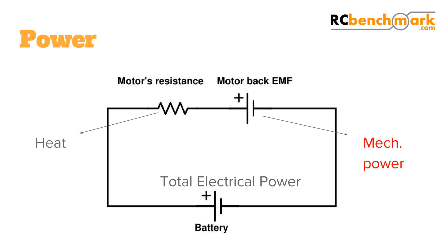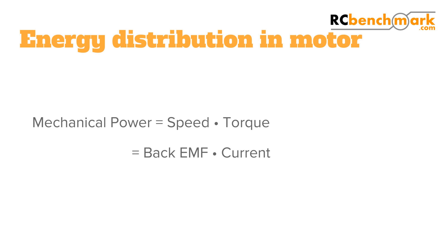Let's look at the model from an energy conservation point of view. The motor outputs energy in two ways: heat due to the resistance, and mechanical energy. Usually, your goal is to minimize what portion of the energy goes as wasted heat in the resistance, and maximize the mechanical work done by the back EMF. The mechanical power generated by a motor is the torque multiplied by the rotation speed. This means that if the motor speed is zero but there is a torque, there is no mechanical power generated. Equally, if the motor spins and it has no load, there is also no mechanical power generated.